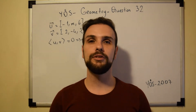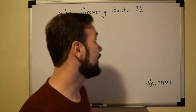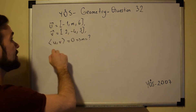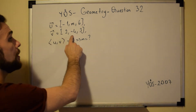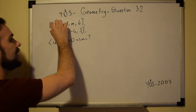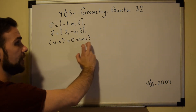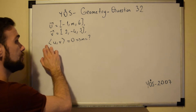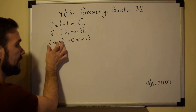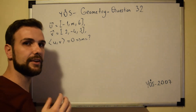Greetings everyone and welcome to question number 32, which is at the same time the last question of the QS examination geometry section. In this question, as you can see, we are dealing with vectors. We have vector U which has values minus 1, M, and 6. We have vector V which has values 2, minus 4, and 3. As soon as you see this symbol, it means this is the dot product of the two vectors, and in this case it is equal to 0. We are asked the value of M. Note that when you see this symbol and the product equals a given value, you do not have to take the absolute value when doing the multiplication.